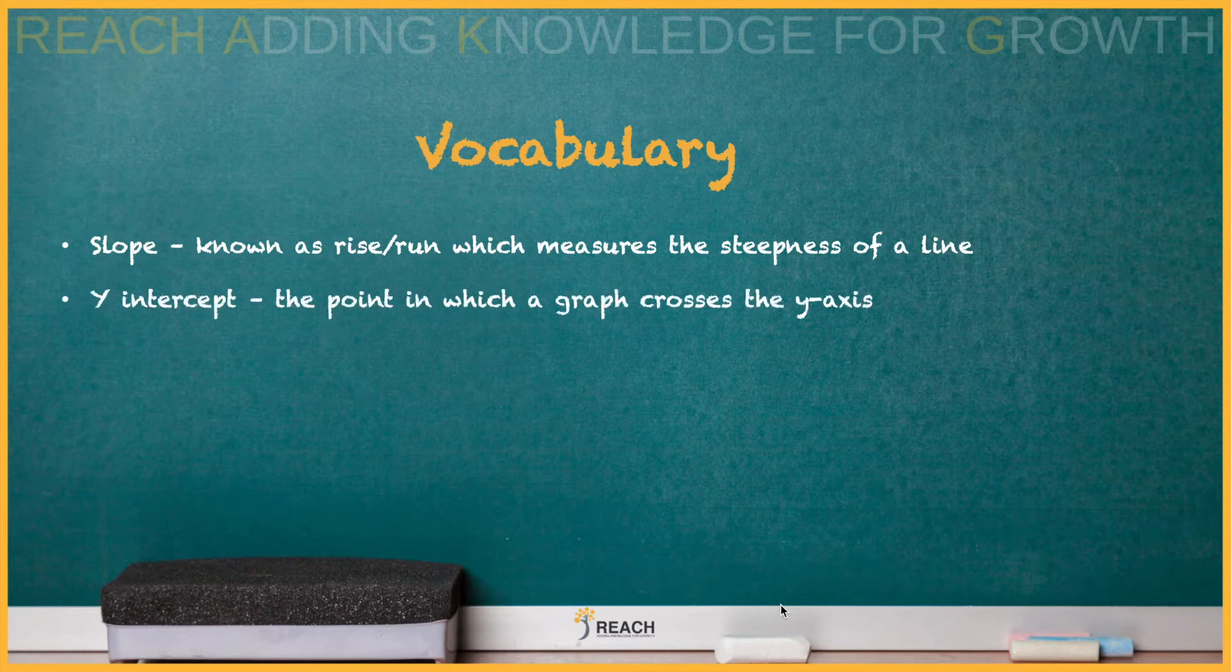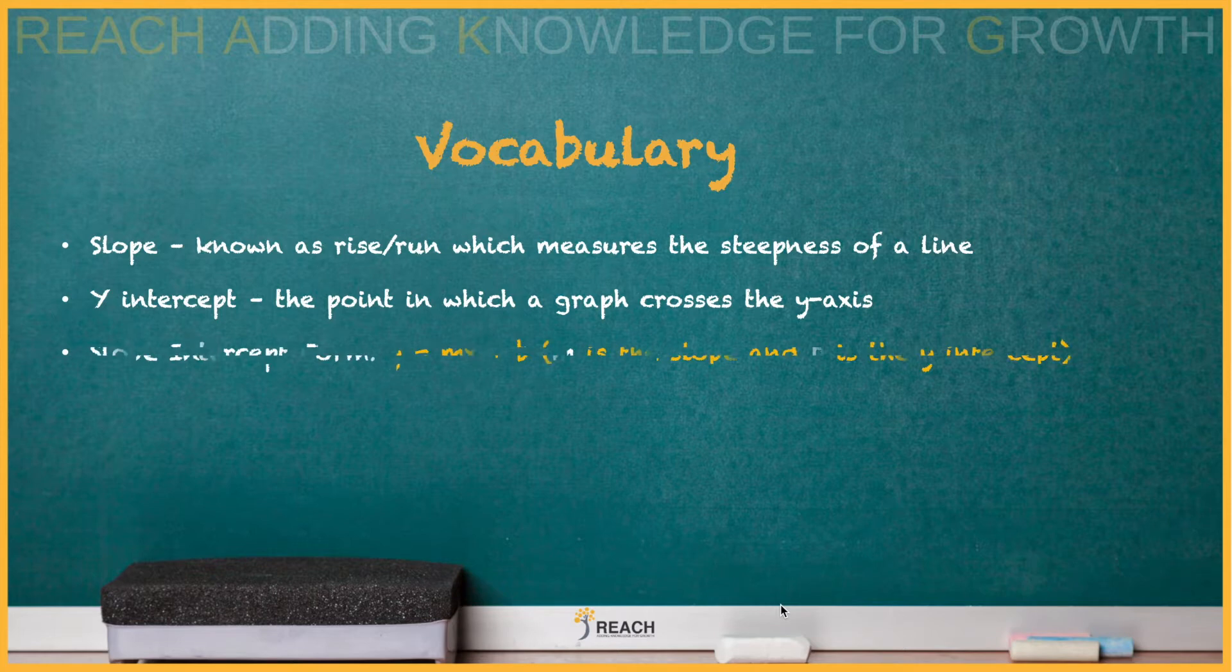Y-intercept is the point in which you cross the y-axis. Slope intercept: y equals mx plus b, where m is the slope and b is the y-intercept.